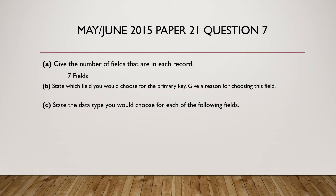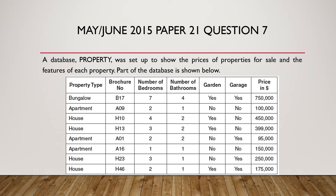State which field you would choose for the primary key and give a reason for choosing this field. Going back to the table, we can see that we have 7 fields, but the only field which has a unique value is the brochure number. So the brochure number should be used as the primary key since it uniquely identifies each property.